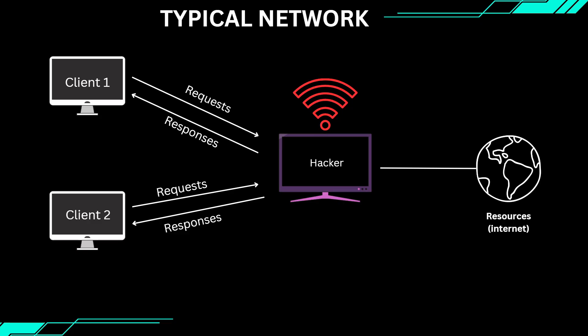We won't need to exploit any protocols or run complicated attacks. People will willingly send us their data because they think they are connected to a legitimate network. This is where things get really interesting. By creating our own Wi-Fi network, clients who connect to it will automatically send all their requests through us. And since we are the router, we can see everything they do. We will forward their requests to the internet and send back responses, just like a real access point — but in the process, we will be able to intercept, sniff, and manipulate the traffic however we like.